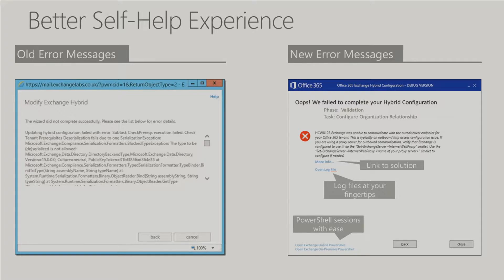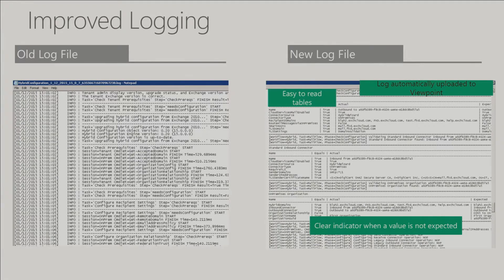We've also done things like helping people understand what changes we made to their connector when running the hybrid wizard. In the logs we now have tables — they're there for machine learning purposes but also so you can see what changes we made. We have an 'actual' column showing your current settings and an 'expected' column showing what we're about to change them to. If you come in and say 'the hybrid wizard broke my mail flow,' you can go back through your log, see what we changed, and change it back.